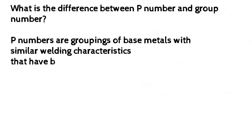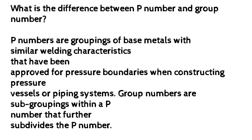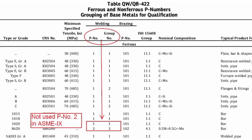What is the difference between P number and group number? P numbers are groupings of base metals with similar welding characteristics that have been approved for pressure boundaries when constructing pressure vessels or piping systems. Group numbers are subgroupings within a P number that further subdivide the P number.